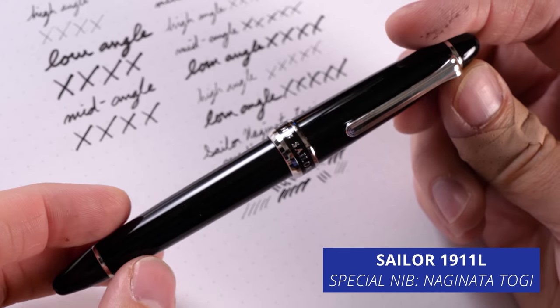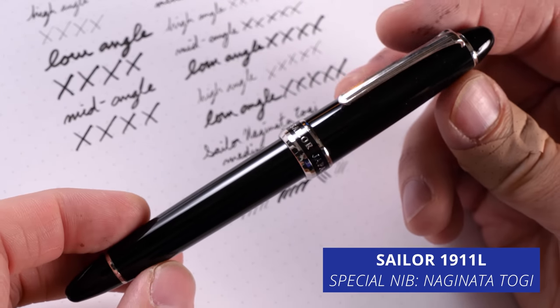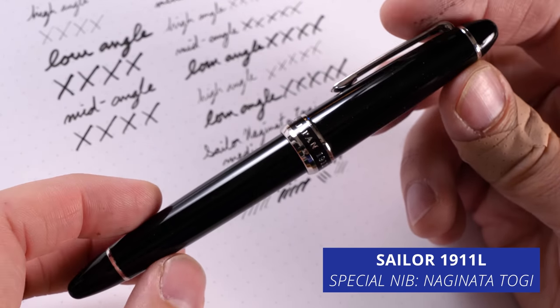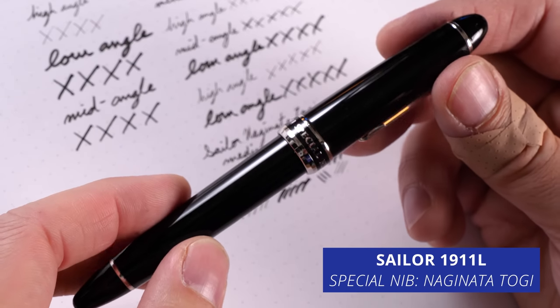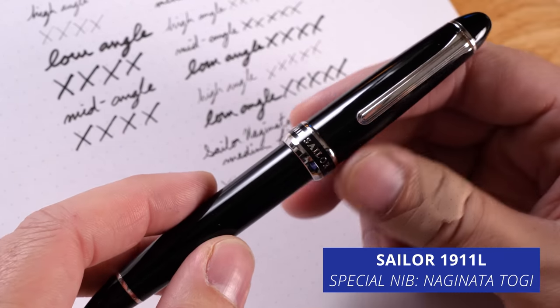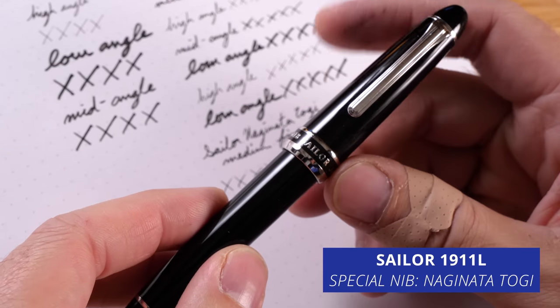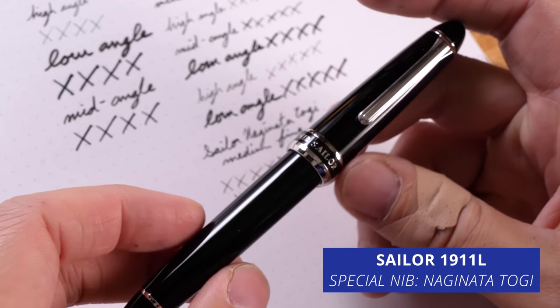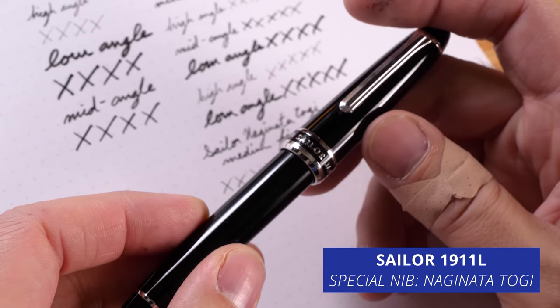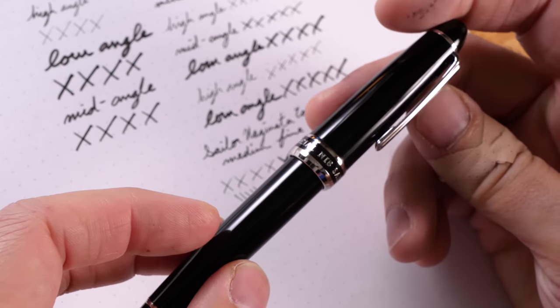So I have in my hands here, this is the Sailor 1911 Naginata Togi. This is one of Sailor's special nibs and it's on the 1911 body, the 1911 L, the large size. So it's the middle, you have the SL and then the King of Pens. This is right there in the middle.